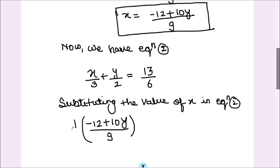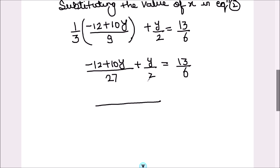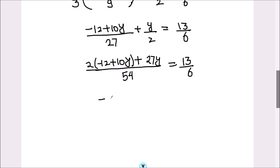So here x is minus 12 plus 10y upon 9, and this is multiplied by 1 upon 3 because x upon 3 appears in the equation, plus y upon 2 equals 13 upon 6. So we get minus 12 plus 10y divided by 9 times 3, which is 27, plus y upon 2 equals 13 upon 6. The LCM of 27 and 2 is 54, so that gives 2 times negative 12 plus 10y plus 27 times y equals 13 upon 6.